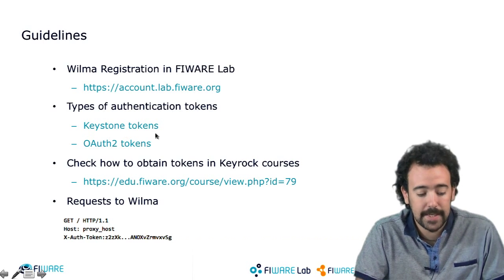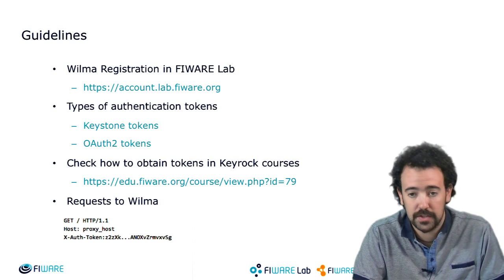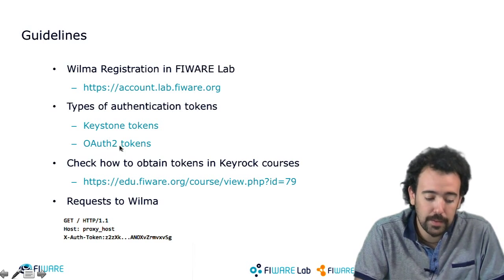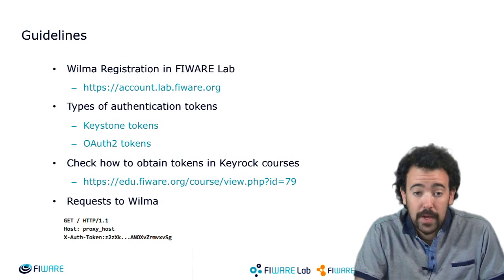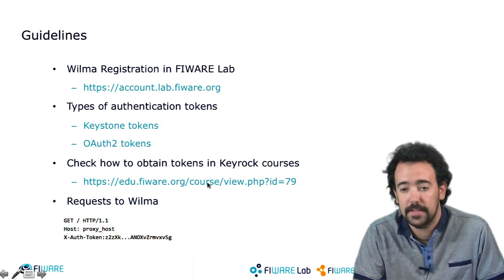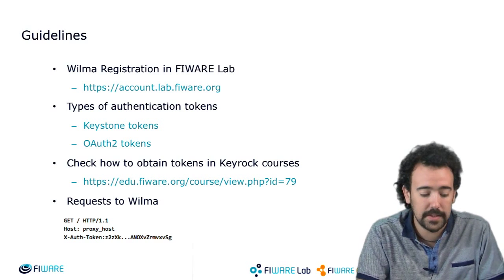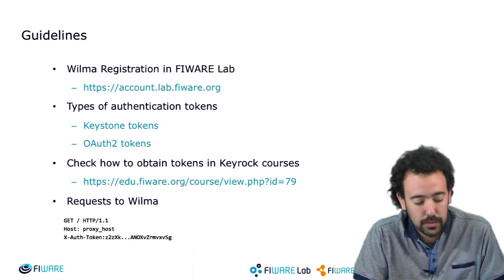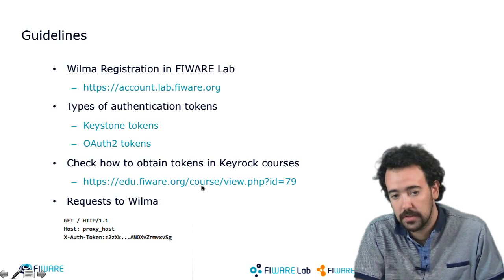You can use Wilma in order to check Keystone tokens, which are the default tokens used by Keystone — the OpenStack component on which Keyrock is based — but in this case we are going to configure Wilma to work with OAuth tokens, which are the typical tokens that we use in the environment. We have another course regarding the Keyrock Generic Enabler in which we explain how to obtain these OAuth tokens, so in this course I'm not going to go into details about how to retrieve them.